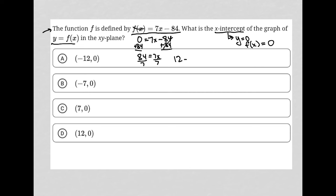and I get 12 is equal to x. So I'm looking for (12, 0) because we know that at the x-intercept y is equal to 0. I want my x value to be 12, my y value to be 0, and therefore the correct answer here is choice D.